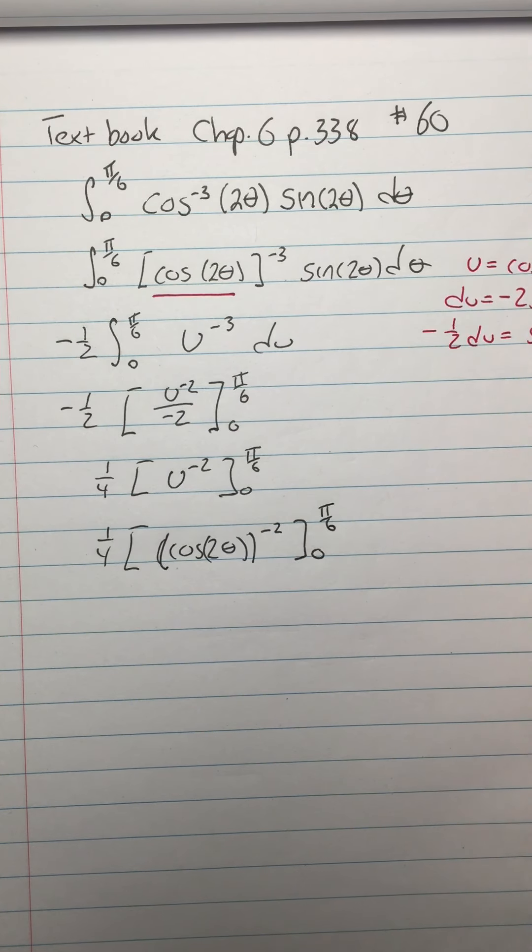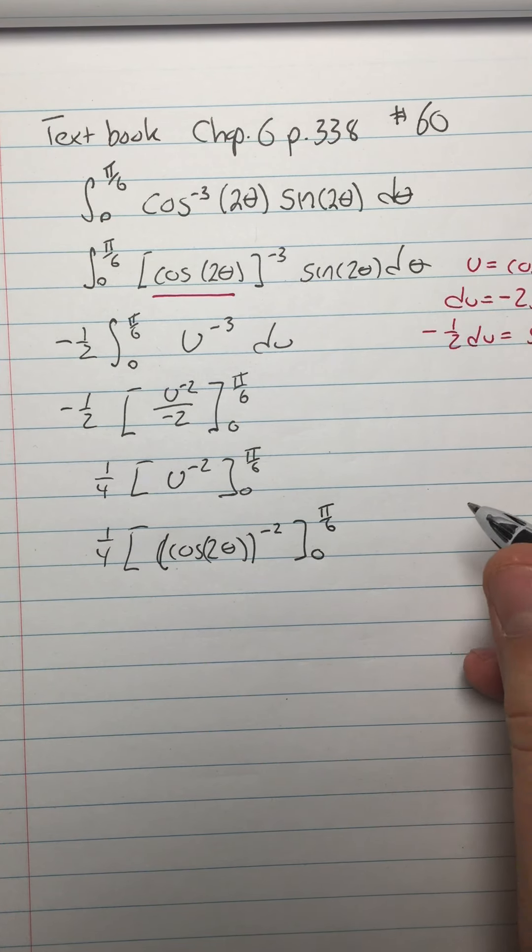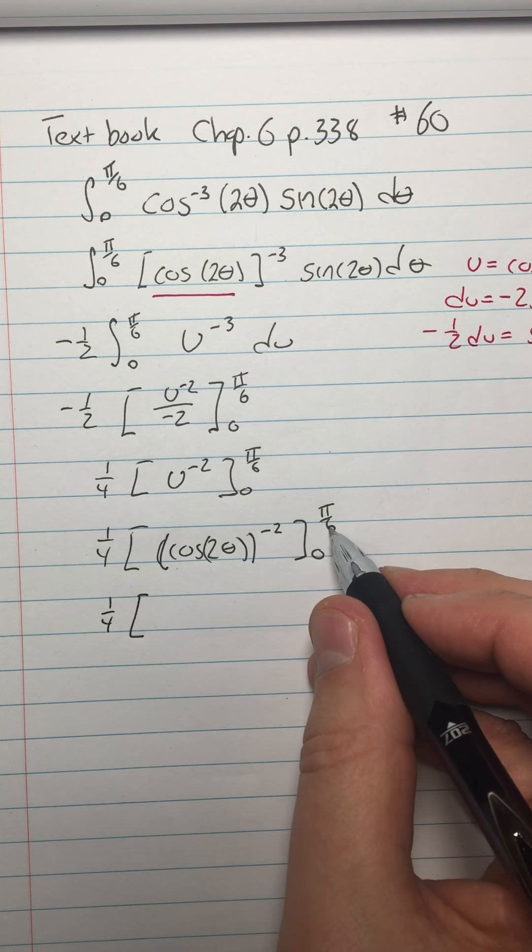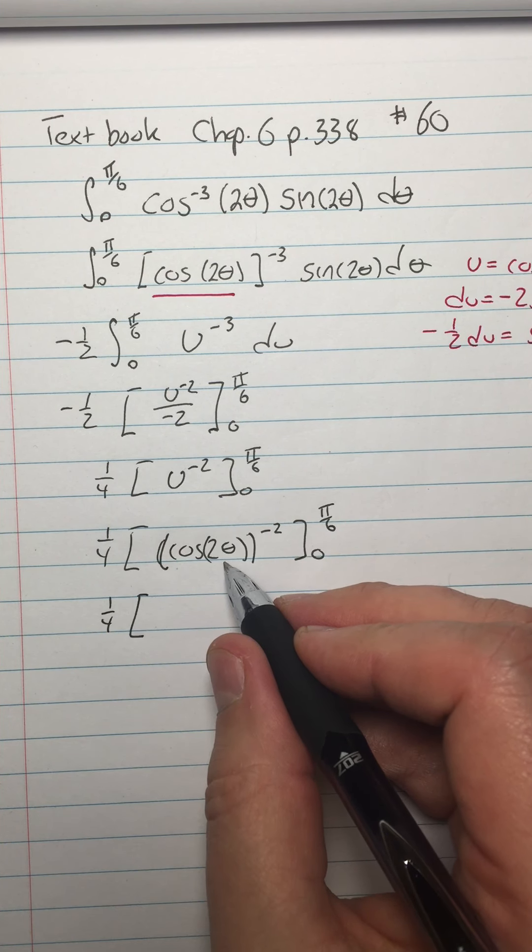Would it have been easier to change the limits? I don't know. Up to you. All right, so then I have one-fourth of... So cosine of 2 theta is going to be cosine of pi over 3, and cosine of pi over 3 is one-half.